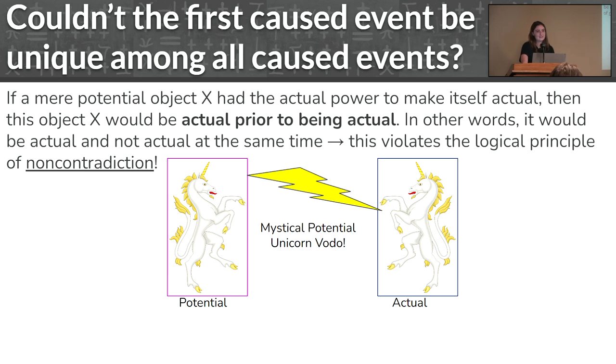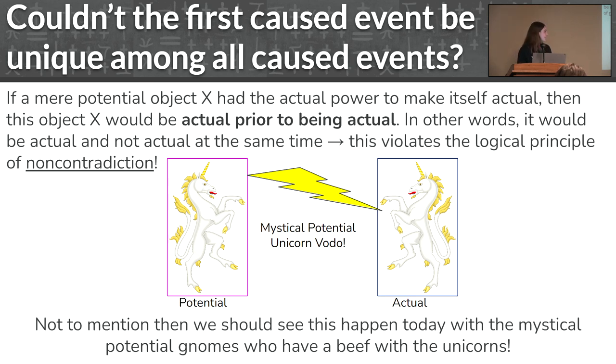Another way to think of that is this: if we posit that things can just pop from potentiality into actuality on their own, then we should be seeing this today in the world. We should actually see this happen regularly. But those potential gnomes who have a beef with the unicorns have not shown up yet. So that's probably not a good theory to be accepting into our worldview as a whole.